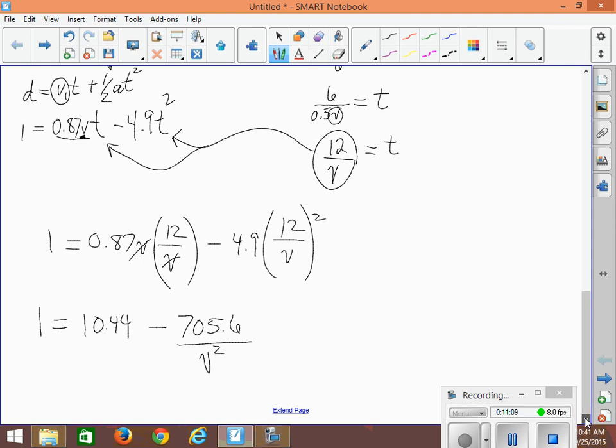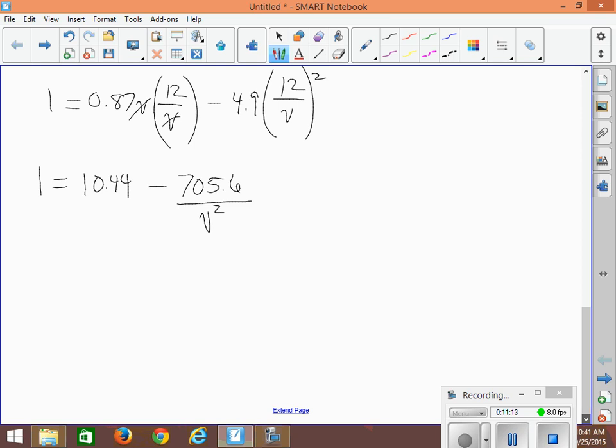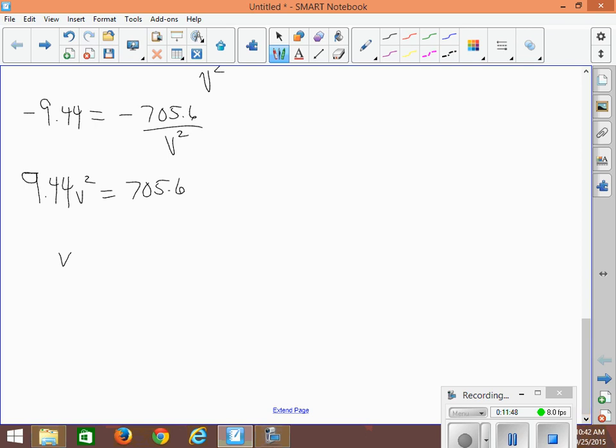What we're going to do is move the 10 to the other side. So it will become negative 10.44. And if I combine that with the 1, that should end up as negative 9.44. And leaving this with negative 705.6 over v squared. Multiply v squared right to the other side. And at the same time, you know what I'll do? I'll divide or multiply both sides of the equation by negative 1 to get rid of the negative. So 9.44v squared equals 705.6. Then we divide both sides by 9.44. V squared equals 705, somebody give me that number, divided by 9.44. What do we get there? 74.7-ish. And then we take the square root of that, and what do we get? 8.6.